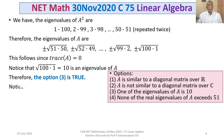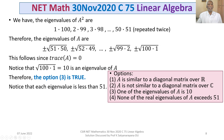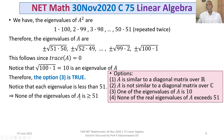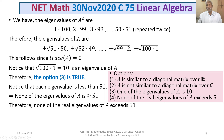Each eigenvalue is less than 51. The highest eigenvalue is √(51×50) = √2550, which is less than 51. None of the real eigenvalues of A exceeds 51. Therefore option 4 — none of the real eigenvalues of A exceeds 51 — is also true.